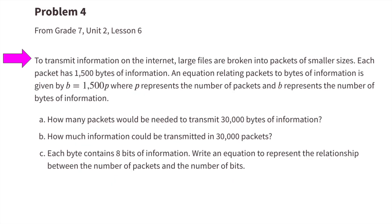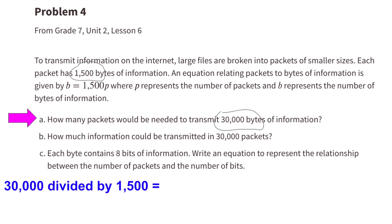Number 4: to transmit information on the internet, large files are broken into packets of smaller sizes. Each packet has 1,500 bytes of information. The equation relating packets to bytes is B equals 1,500 times P, where P is the number of packets and B is the number of bytes. Part A: how many packets are needed to transmit 30,000 bytes? 30,000 divided by 1,500 equals 20, so 20 packets are needed.